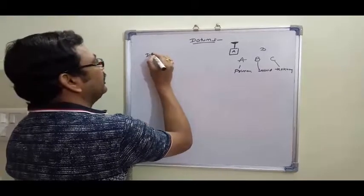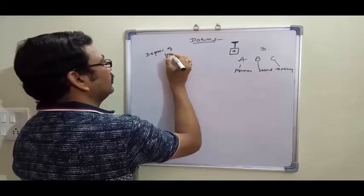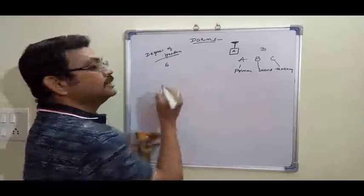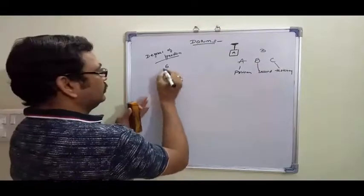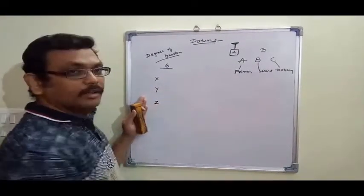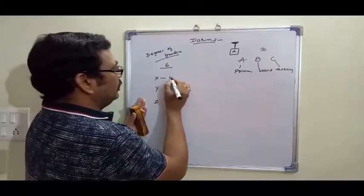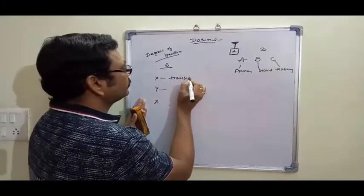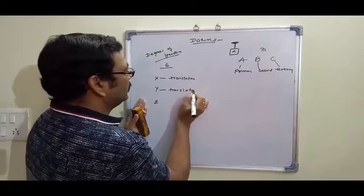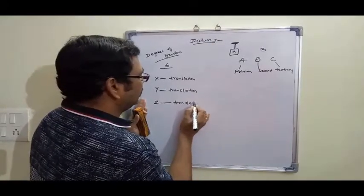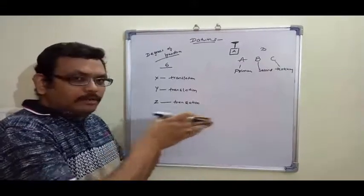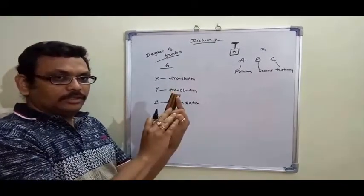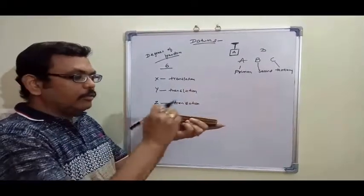Each and every component will have a minimum of six degrees of freedom. We have X, Y, Z — linear or translation movements: X translation, Y translation, Z translation. Translation is just a linear movement — the component translates along an axis. Rotation is a rotational movement around an axis. These are the six degrees of freedom: three translations and three rotations.